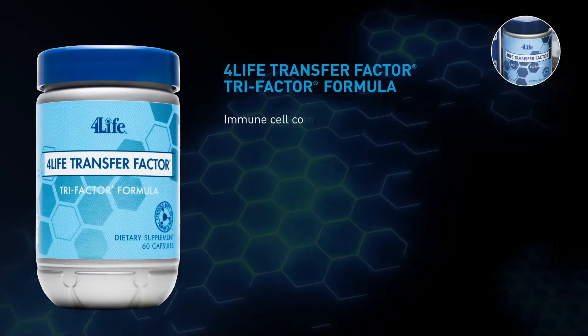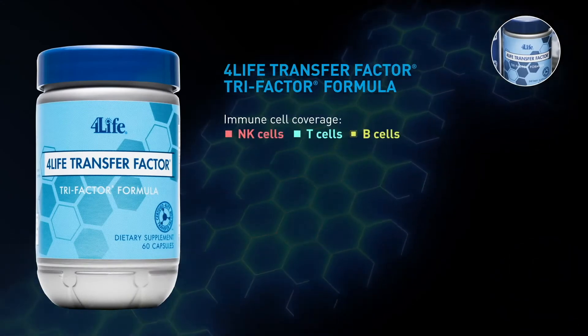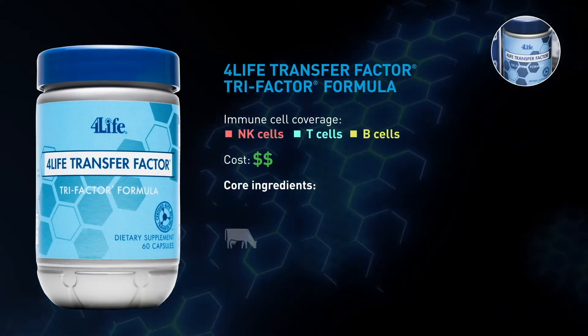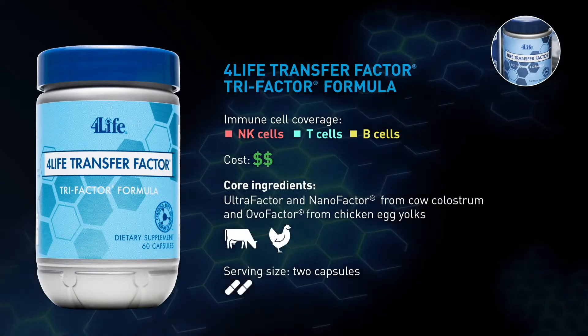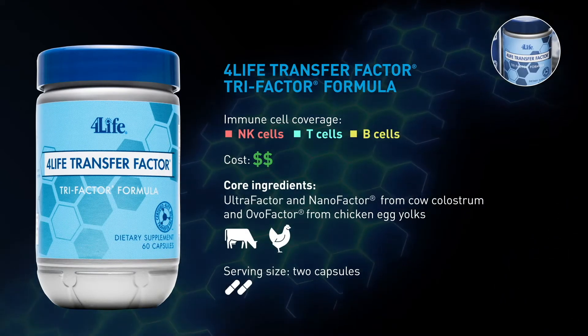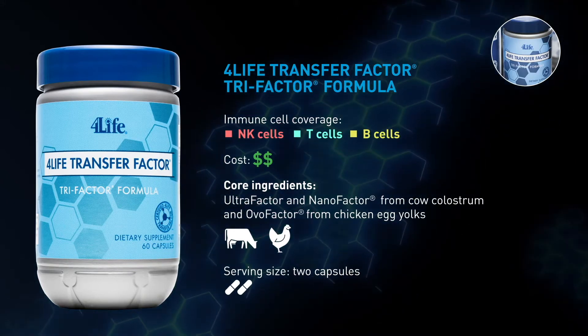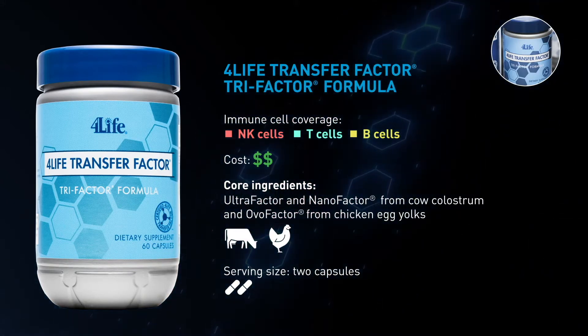4-Life Transfer Factor Tri-Factor formula combines Ultra-Factor from cow colostrum with OVO-Factor from chicken egg yolks for more broad-based immune system support. Nano-Factor mini molecules from cow colostrum also assist in immune response coordination.